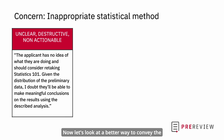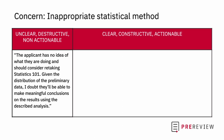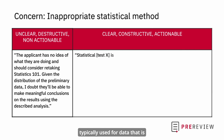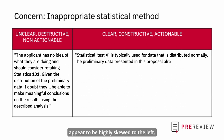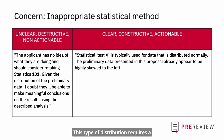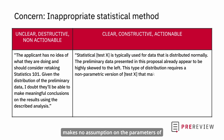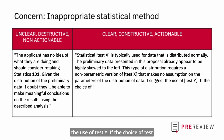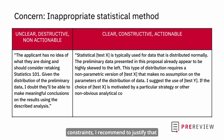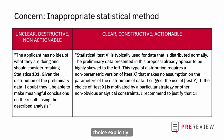Let's look at a better way to convey the same concern: 'Statistical test X is typically used for data that is distributed normally. The preliminary data presented in this proposal already appear to be highly skewed to the left. This type of distribution requires a non-parametric version of test X that makes no assumption on the parameters of the distribution of the data. I suggest the use of test Y. If the choice of test X is motivated by a particular strategy or other non-obvious analytical constraints, I recommend to justify that choice explicitly.'